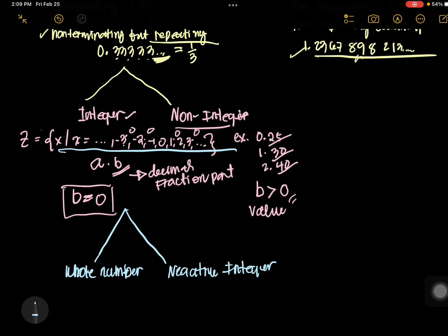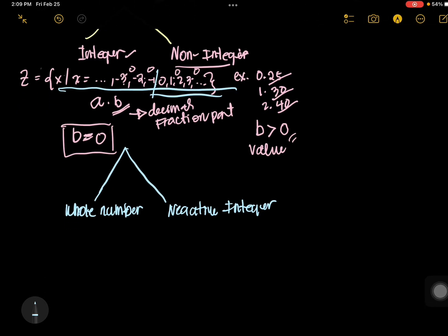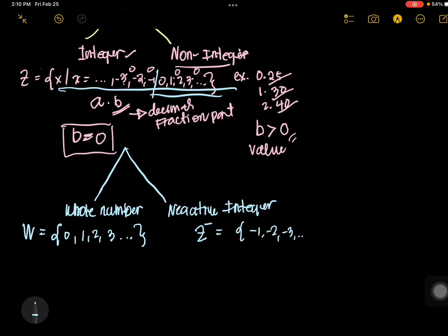Whole numbers, as you can see, are 0, 1, 2, 3, and so on. And negative numbers are negative integers: negative 1, negative 2, negative 3, and so on.